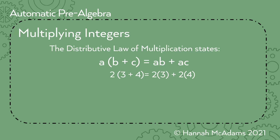Now we multiply before we add. Two times seven is 14, and six plus eight is 14. And so 14 is the same number as 14. So that's good. Now we're going to use that idea to talk about what happens when we multiply a positive number times a negative number. Would you agree that two times zero is zero? Would you agree that four minus four is zero? So what we're going to do is replace that zero — two times zero — with two times parentheses four minus four.